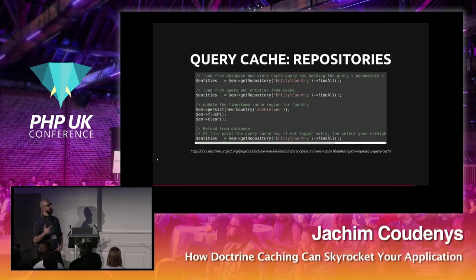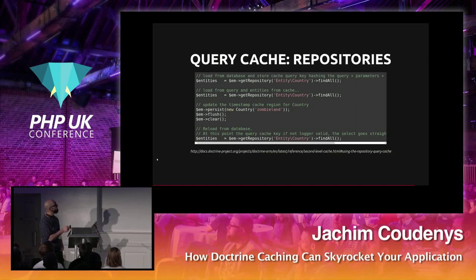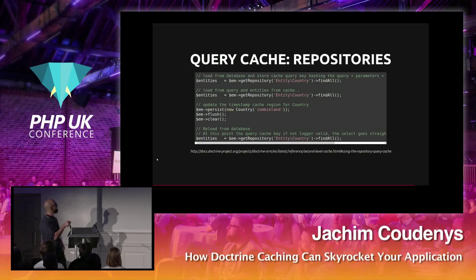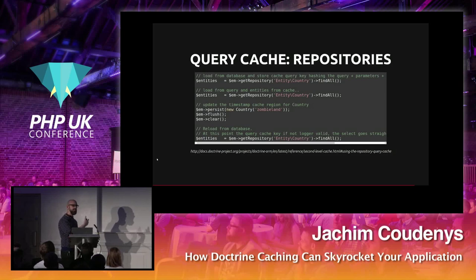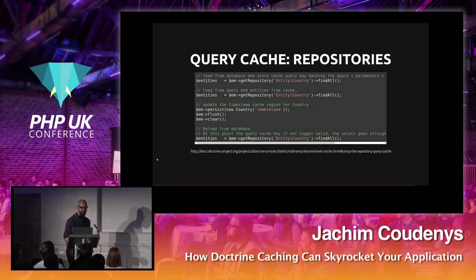There is also a concept of timestamp regions used by persisters in the background. When data is fetched, the query is stored along with entries in a timestamped region. When the same query is requested again it loads from cache. But when you update and flush an entity, the persister sees that the specific cache region has a different timestamp, so it knows the cache is stale — helping automatically with second-level cache invalidation.